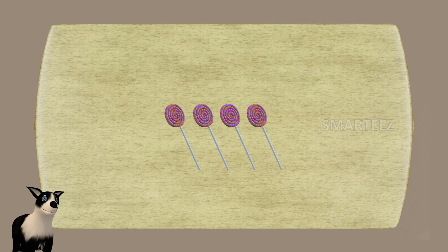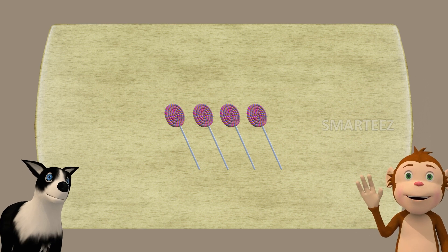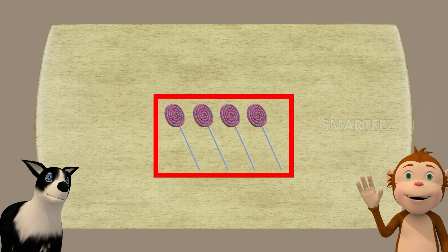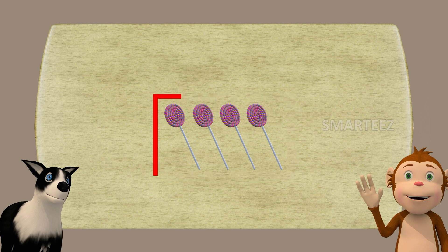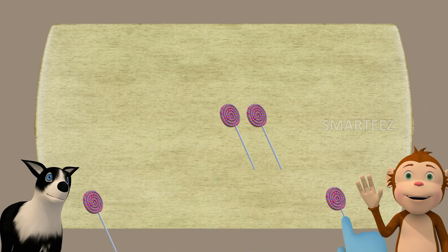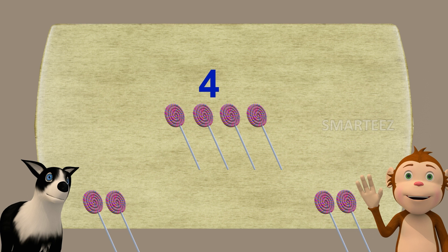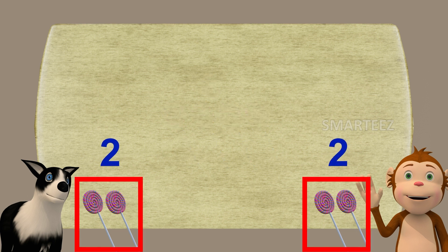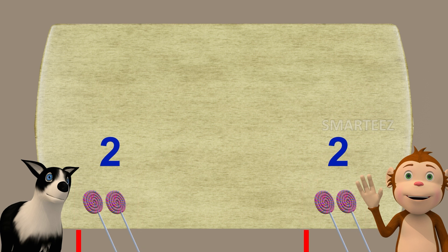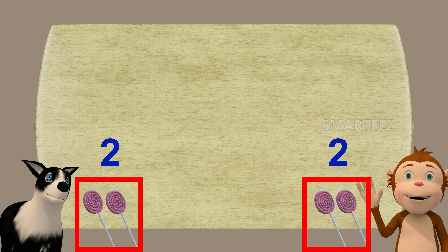I'm gonna keep giving one to Byra and one to Rangu until it gets over. I want you to watch closely at the table. I have four candies here — one to Byra, one to Rangu, one to Byra, one to Rangu. That's it, we're done. I split four candies among the two of you and you got two candies each. So when we split four candies between two people, each one gets two candies.